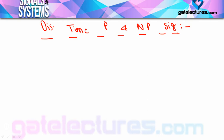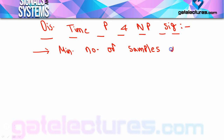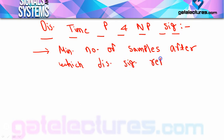First of all, in discrete time signals we will identify the period. The period is the minimum number of samples taken by the discrete time signal to repeat itself — or you can say, the minimum number of samples after which the discrete time signal repeats itself. This is called the period of the discrete time signal.